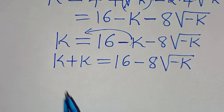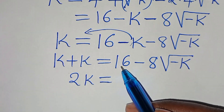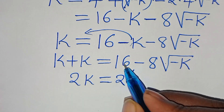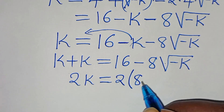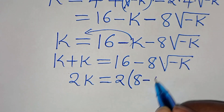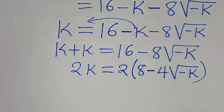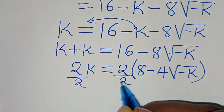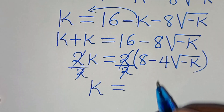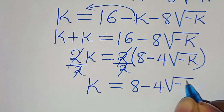k plus k is 2k, equal to 16 minus 8 times the square root of minus k. We can factor out 2: 2 is common, so we have 2 times (8 minus 4 times the square root of minus k). Dividing both sides by 2, we get k equals 8 minus 4 times the square root of minus k.